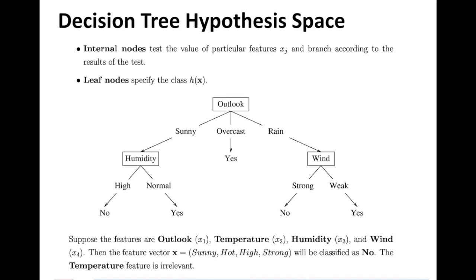Suppose we want to decide whether or not to play tennis based on outlook, temperature, humidity, and wind conditions. Each of these corresponds to a feature or attribute on which you make the decision. These attributes take specific values: outlook can be sunny, overcast, or rainy; humidity can be high or normal; and wind is strong or weak.